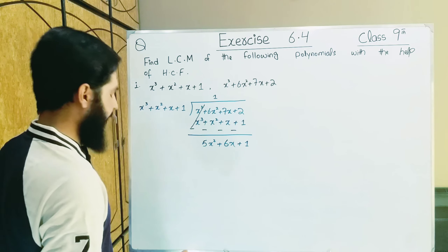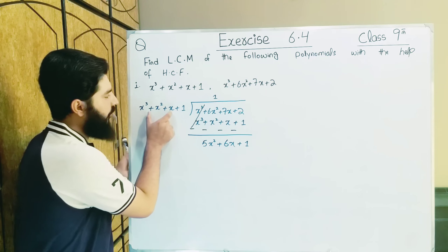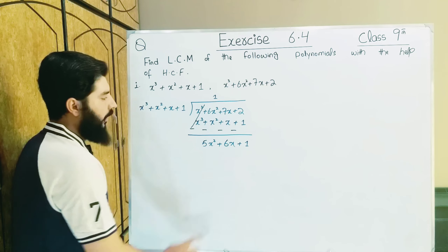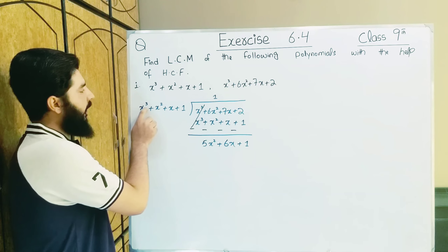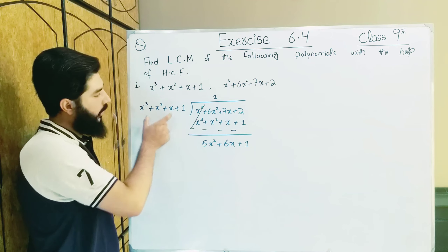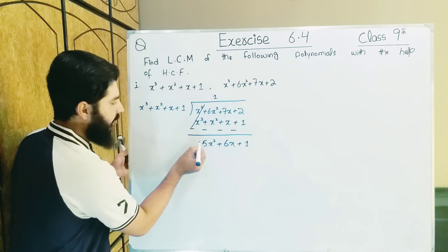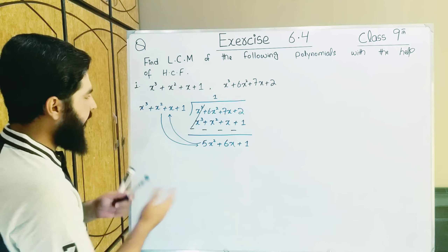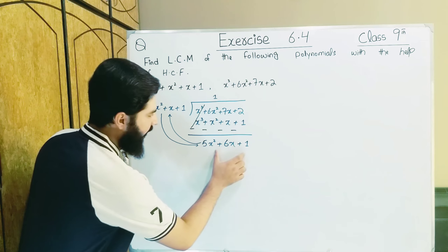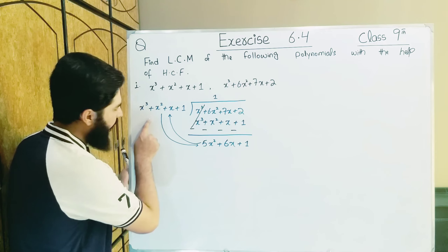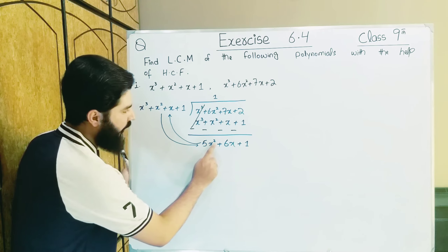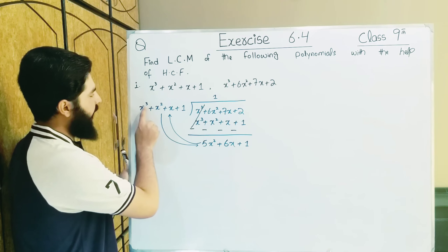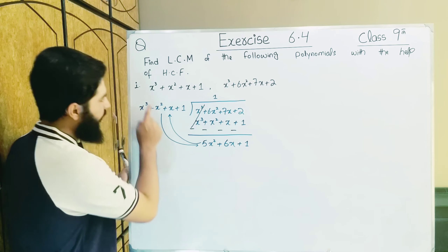So this was our first step. Now, one more thing to understand: the outside value must be greater. Here we have 5x² and the outside value has gone on. The outside value is greater and the inside value is small. When this happens, we swap: the small value stays outside, and if the inside value becomes small, we take it outside and bring the outside value inside. The outside value is x³ (cube) and the inside is x² (square) — since 3 is greater than 2, the outside value is bigger, so we bring it inside.